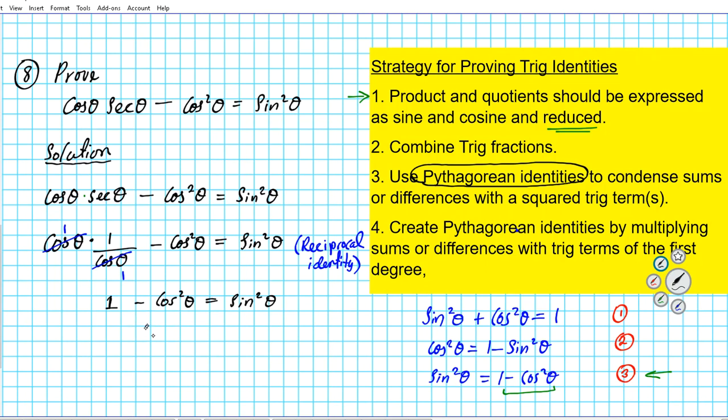So the left side, we can replace it with sine squared theta. Just bring down the right side sine squared theta. Is it equal to sine squared theta? Absolutely. We have completed the proof because we've been able to show that the left-hand side of the equation is equal to the right-hand side.